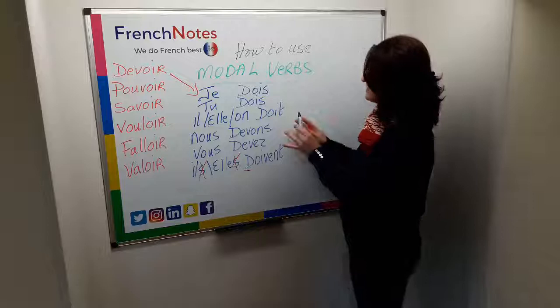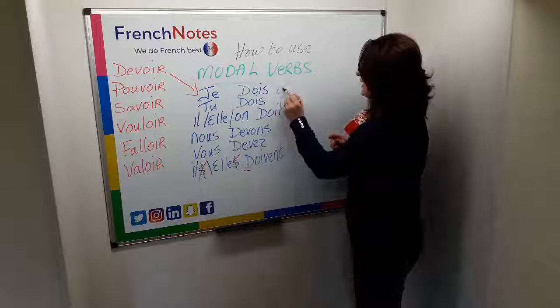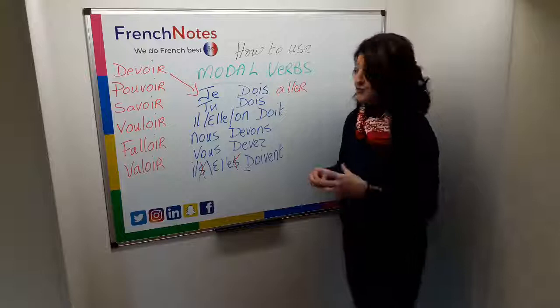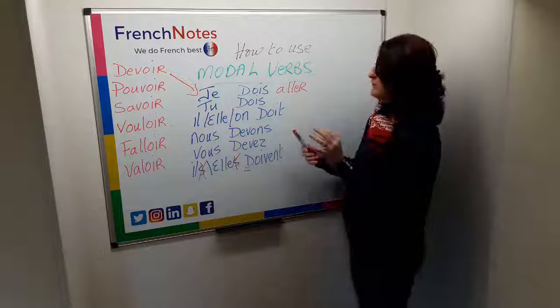So if you want to say I have to go to the doctor, you would say je dois and then you take your verb 'to go' and leave it in the infinitive. So je dois aller chez le médecin — as in to his surgery. Tu dois aller chez le médecin. Remember with modal verbs, you've already got your first verb, your modal verb, which is conjugated, and then it is just followed by the infinitive.